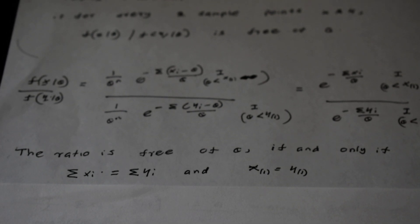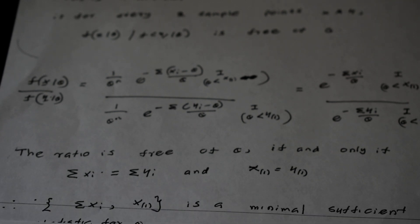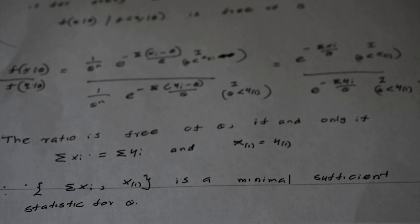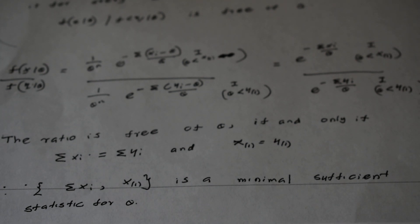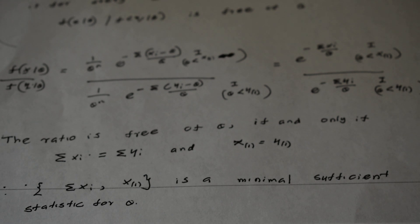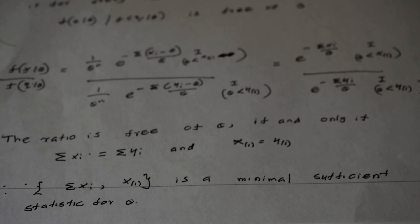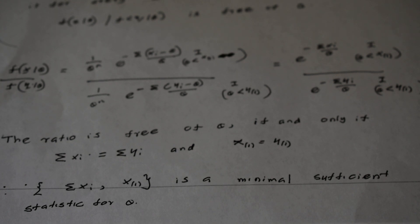Therefore, the ratio is free of theta if and only if both sum of xi equals sum of yi and x_(1) equals y_(1). In other words, the pair (sum of xi, x_(1)) — that is, (sum of xi, minimum order statistic) — is the minimum sufficient statistic for theta. That is how we apply the Factorization Theorem and Lehmann-Scheffé Lemma to find sufficient and minimum sufficient statistics. If you found this video useful, please give a thumbs up and subscribe to my YouTube channel. Thank you.